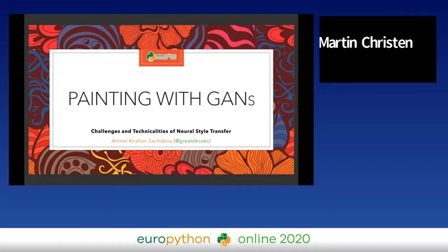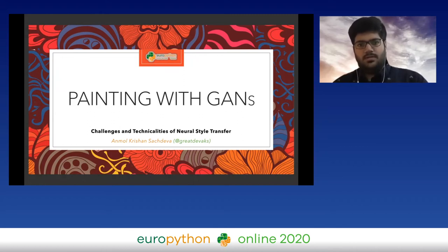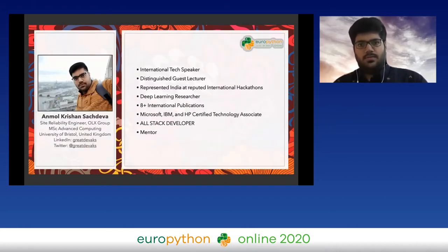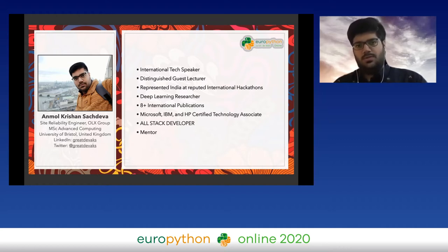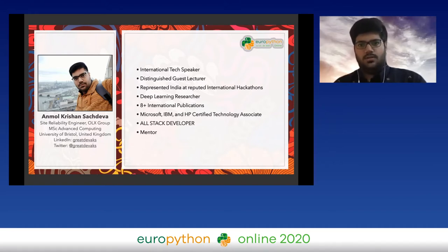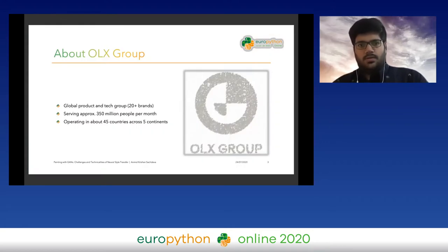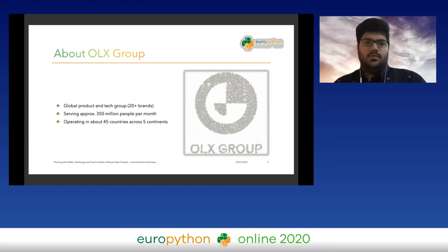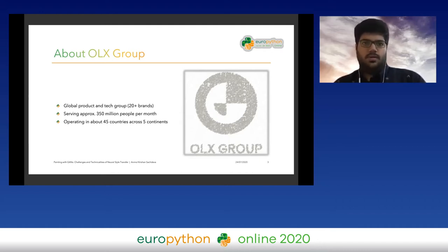Thanks Martin for the introduction. Hi everyone, I'm Anmol Krishan Sarteva. The title for today's talk is 'Painting with GANs' — we'll be talking about neural style transfer and the technicalities and challenges of using it. I'm an international tech speaker and a distinguished guest lecturer working at OLX Group. I did my masters in advanced computing from the University of Bristol, specializing in computational neuroscience and artificial intelligence. OLX Group contains 20-plus brands, with around 45 offices spanning five continents, serving 350 million people per month.